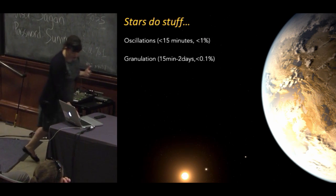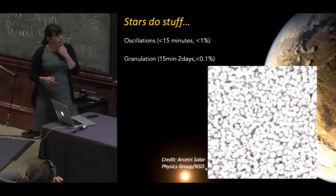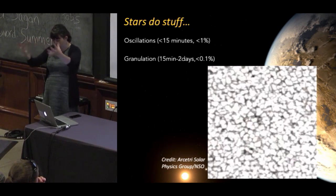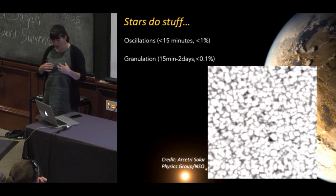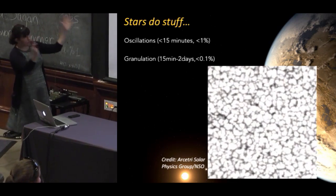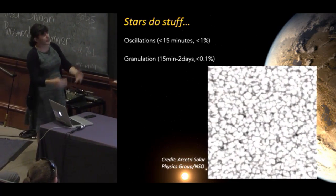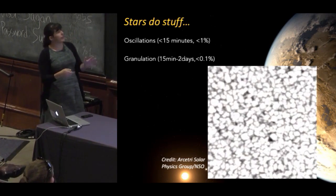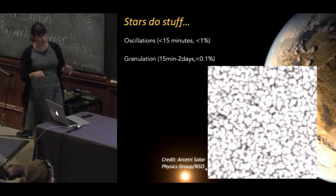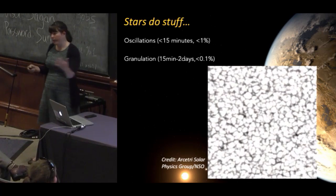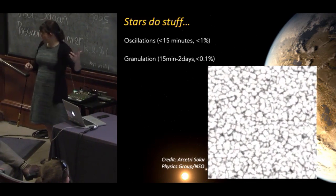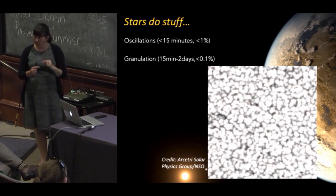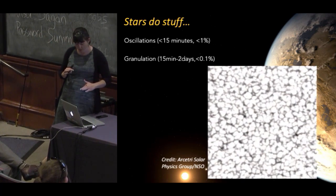Granulation doesn't just affect radial velocities. The surface of the star has hot plasma coming up and cool plasma going down. When you integrate that over the entire surface of the star, it's a small effect — about 0.1%. But remember, we're looking for something that's 0.01%, so this is actually a big deal. It's on longer timescales but low frequency, so we care about it.